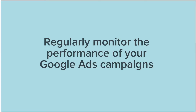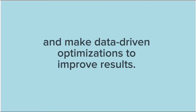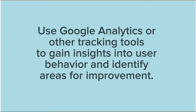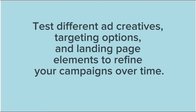Regularly monitor the performance of your Google Ads campaigns and make data-driven optimizations to improve results. Track key metrics such as click-through rate (CTR), conversion rate, cost per click (CPC), and return on ad spend (ROAS). Use Google Analytics or other tracking tools to gain insights into user behavior and identify areas for improvement. Test different ad creatives, targeting options, and landing page elements to refine your campaigns over time.